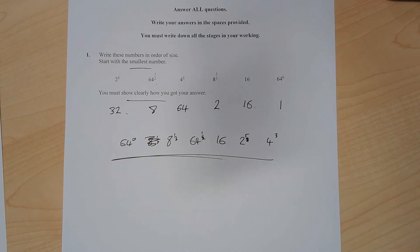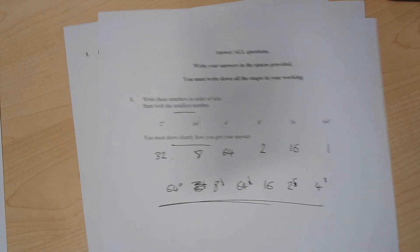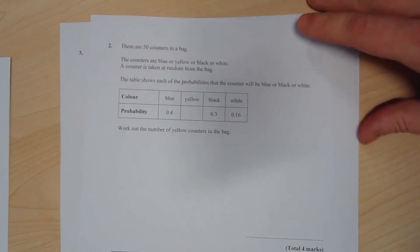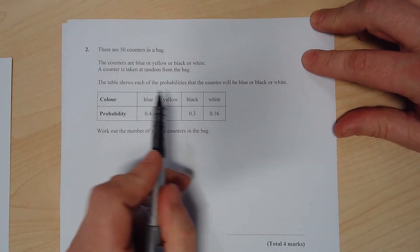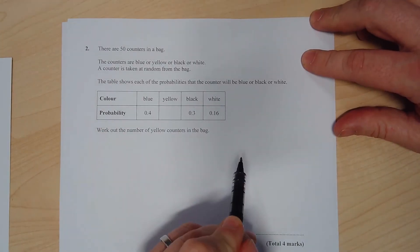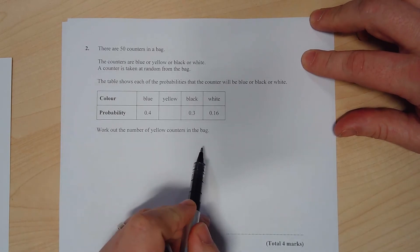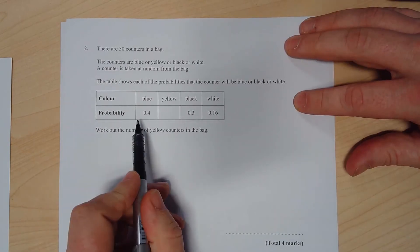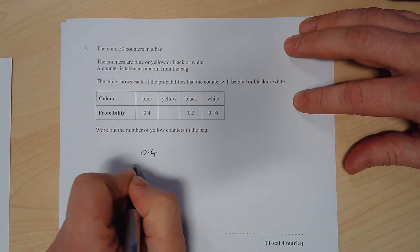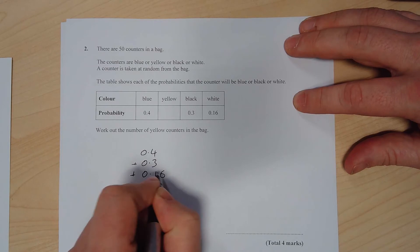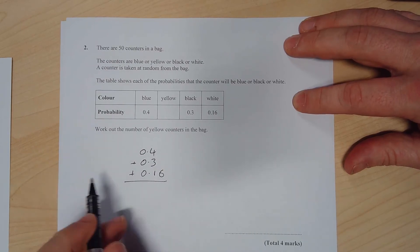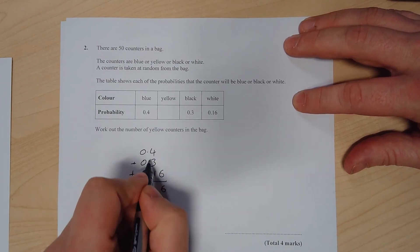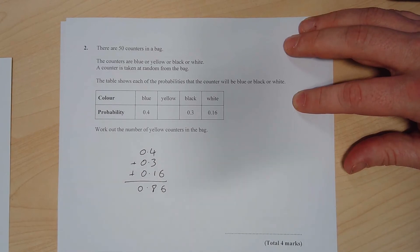Question 2: There are 50 counters in a bag. It's a probability question. Counters are blue, yellow, black, or white. We've got a table that shows it all. Work out the number of yellow counters in the bag. You should know that probability always adds up to 1, so 0.4 plus 0.3 plus 0.16 - careful with laying out your adding decimals - that's 6, 7, and 8. Those numbers in the table add up to 0.86, so I know the missing number must be 0.14.